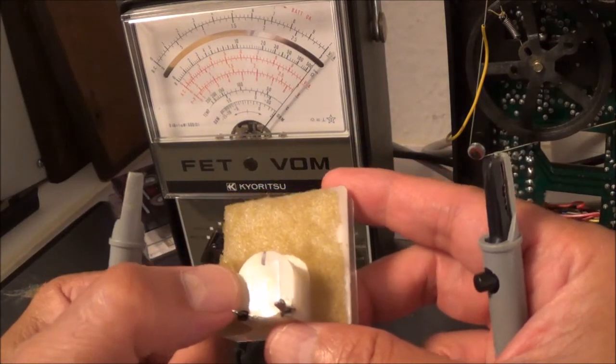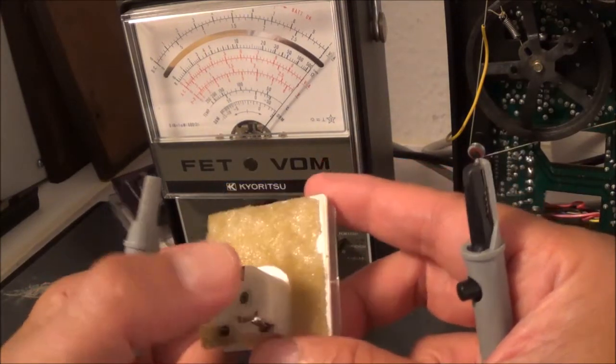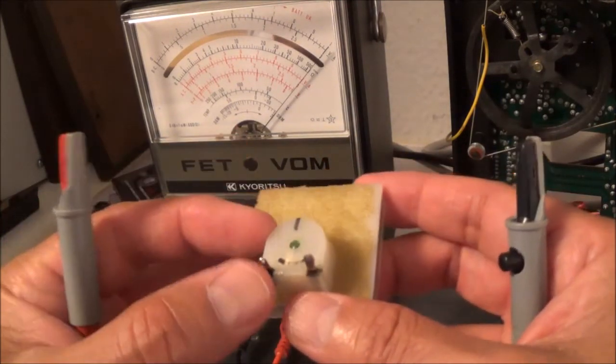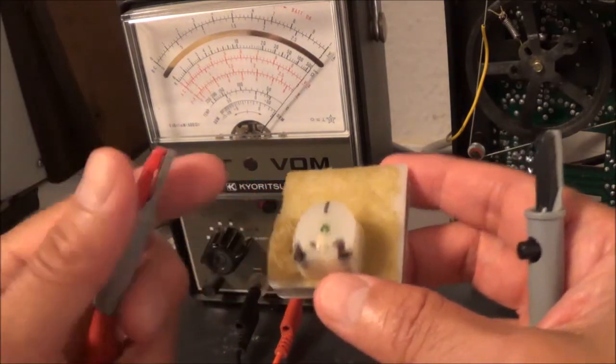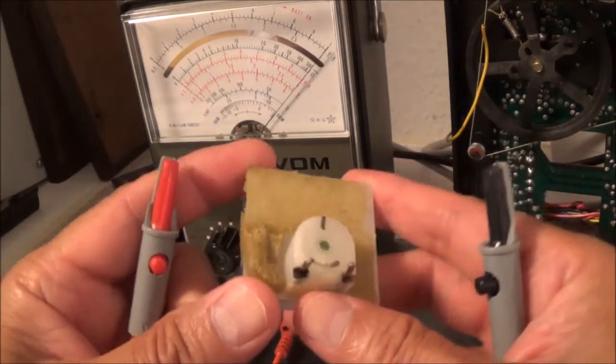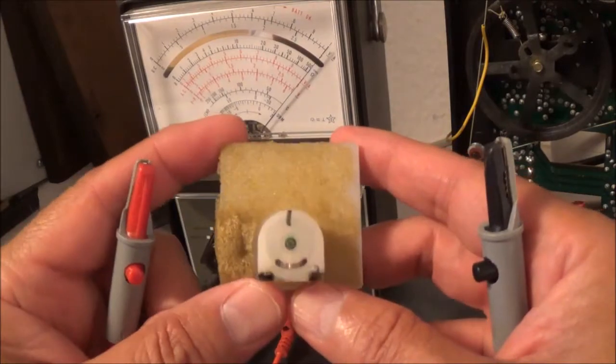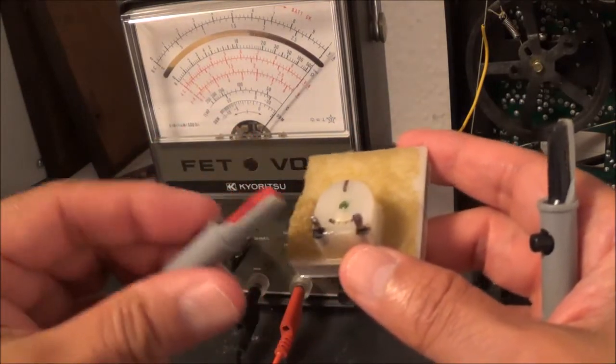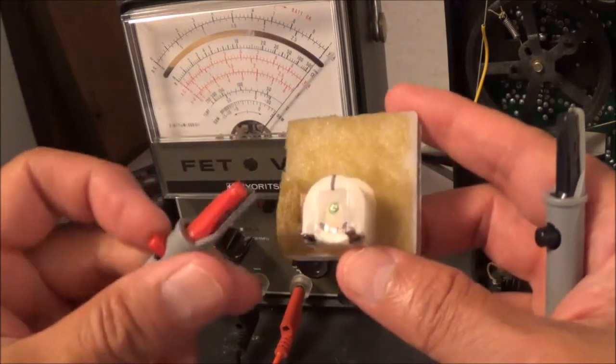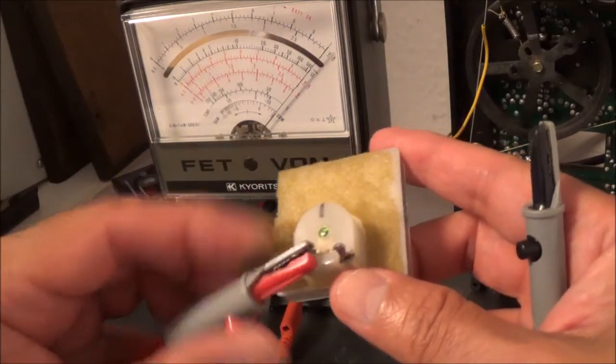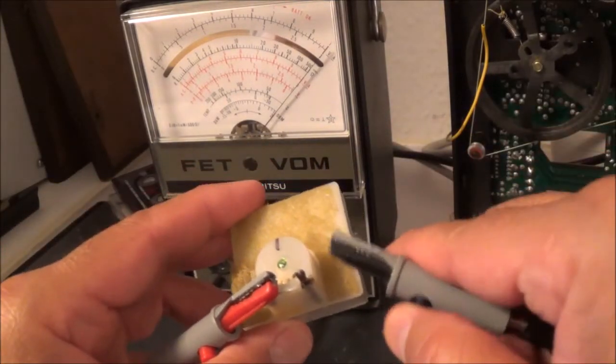And here there's a little plus sign on here and there's a minus sign on there. But even if it wasn't there, you could probably, if the meter, if this VU meter is good, you could probably figure it out quick if you just put it on there for a second. So plus to plus, minus to minus. I'm going to watch the needle back here.